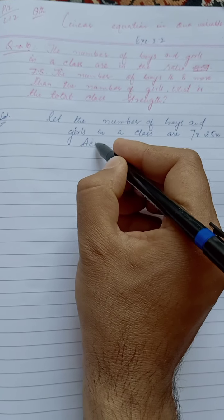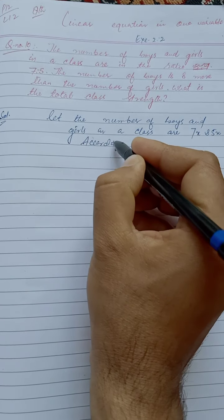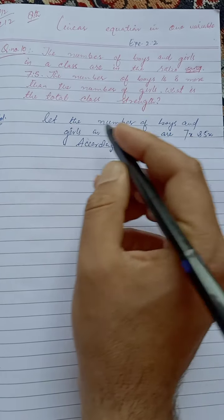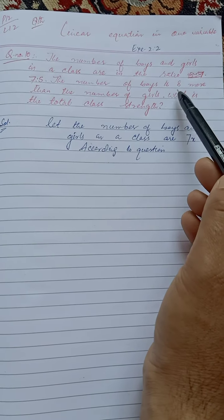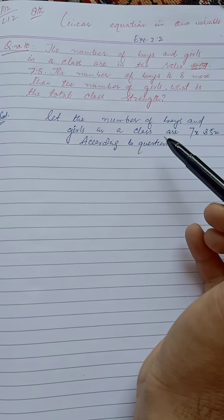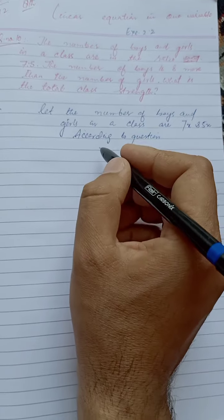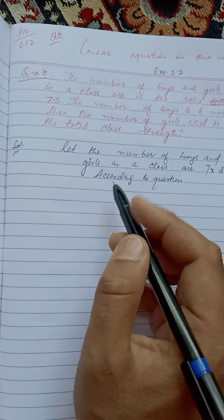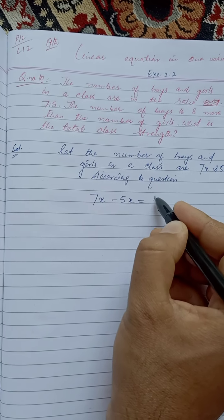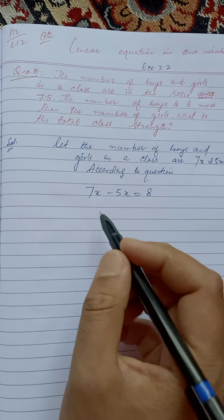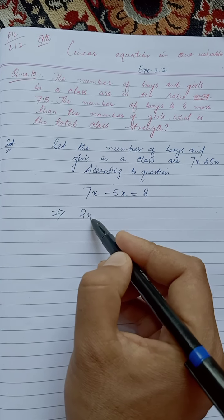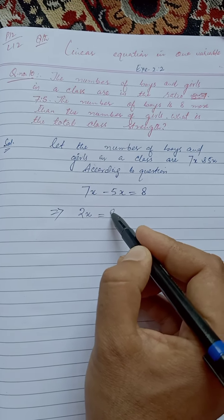According to the question, the number of boys is 8 more than girls, so 7x minus 5x is equal to 8. This simplifies to 7x minus 5x, which means 2x is equal to 8.